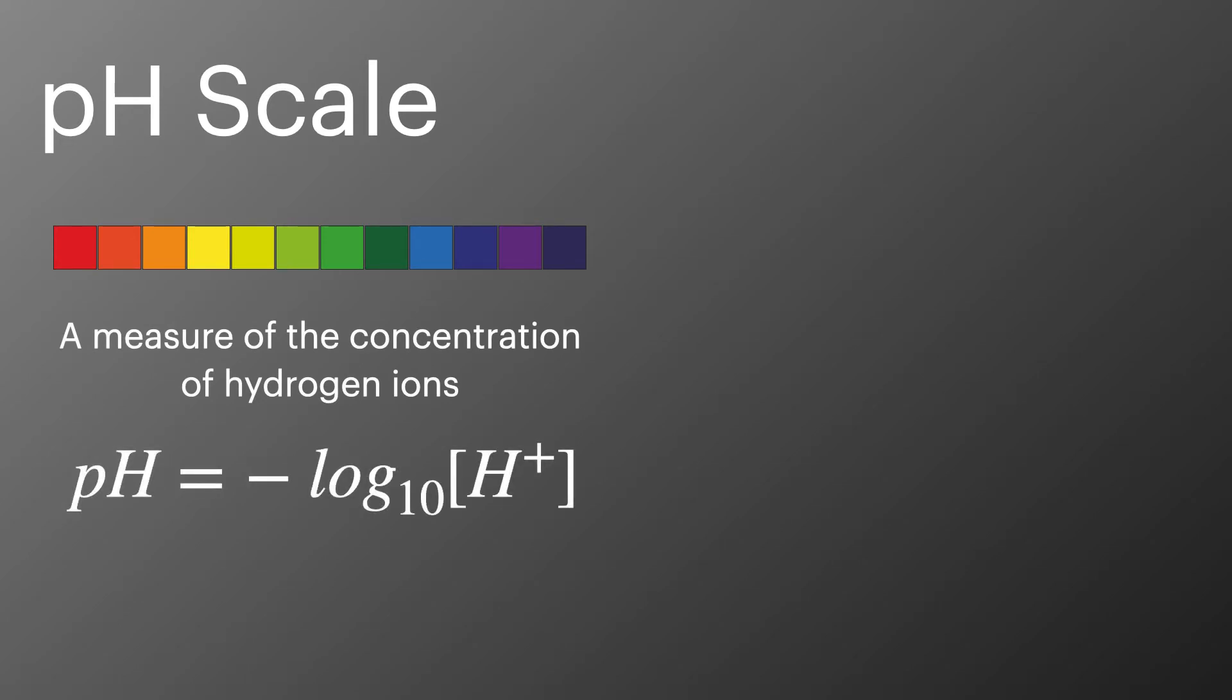When we think about pH we often think about the universal indicator scale for measuring pH and what it's actually measuring is the concentration of hydrogen ions in solution. But to make these numbers easier to deal with as the range can be quite broad, the concentration is placed on a logarithmic scale using this equation.